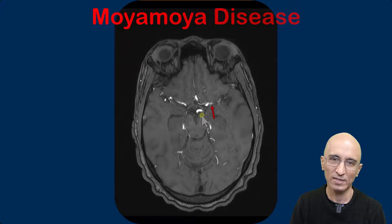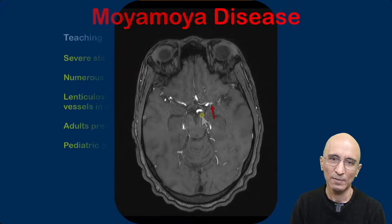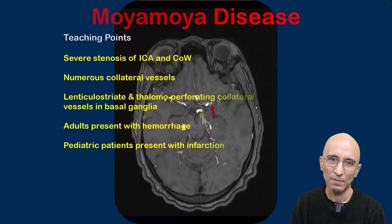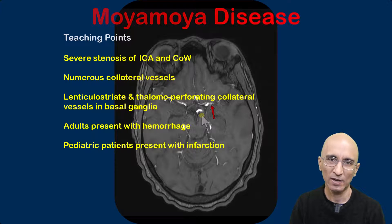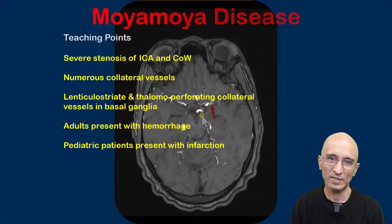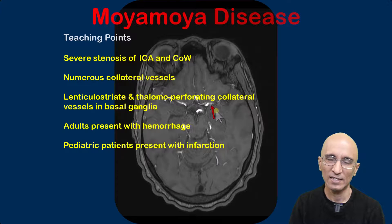This constellation of findings is consistent with Moyamoya disease. In Moyamoya disease there is marked stenosis of the internal carotid artery and the circle of Willis. Rarely there can also be severe stenosis of the posterior cerebral artery. Due to the severe stenosis, a number of collateral vessels are formed; some arise from the lenticulostriate and thalamoperforating branches.